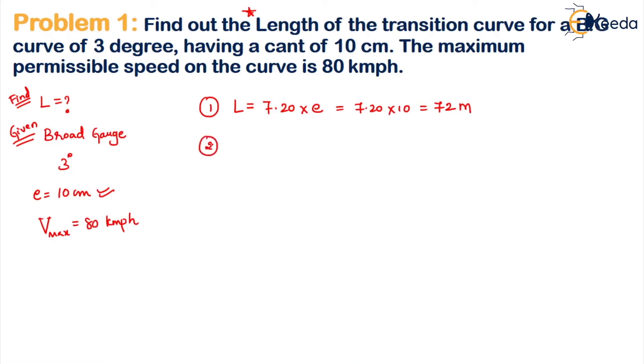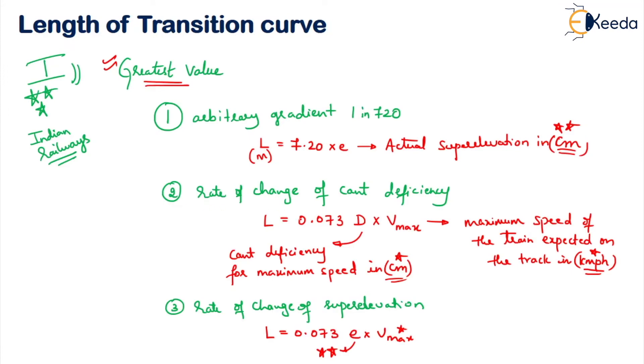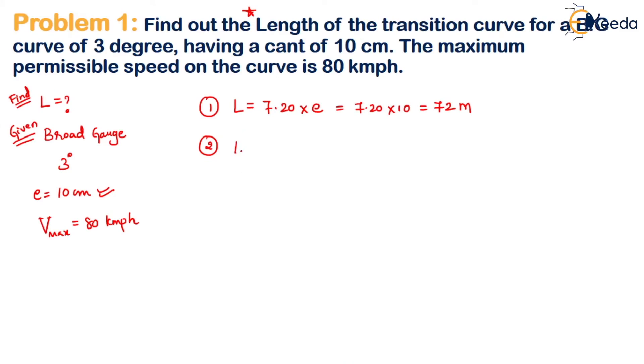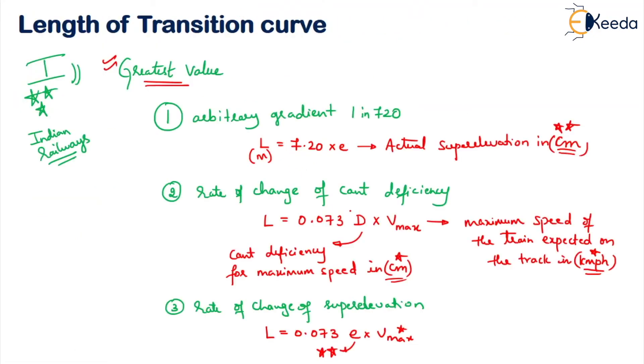Moving to the second formula: L = 0.073 × D × Vmax. Here, D is the cant deficiency for maximum speed in centimeters, and Vmax is the maximum speed in kmph.